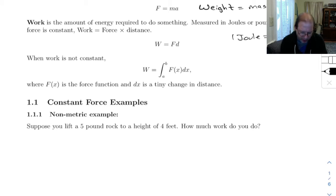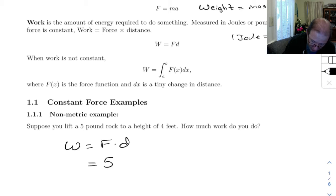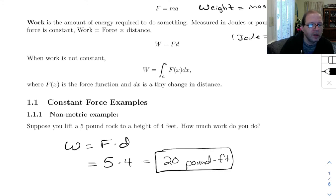So first up, let's do a couple of examples just using this. This first example, non-metric, it says suppose you lift a 5-pound rock to a height of 4 feet. How much work do you do? Well, this is just work equals force times distance, and there's really nothing to this. The force is 5 pounds, that's the weight. Tell you what, I'm not going to write the units on here. So you got 5 pounds and the distance is 4 feet, so 5 times 4 is 20 pound-feet.